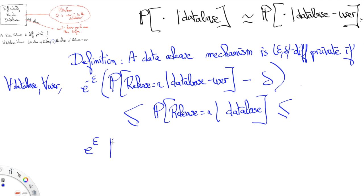And e to the epsilon times the same probability, that is the probability that the released data is equal to r given that the user is removed from the database plus a small quantity delta.